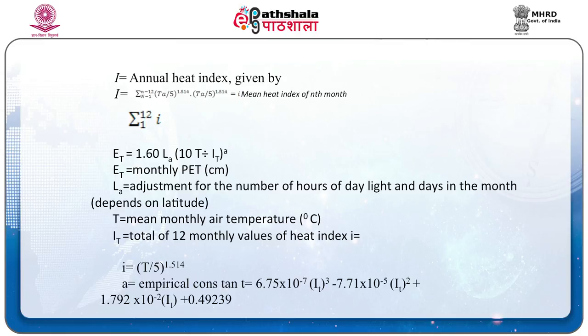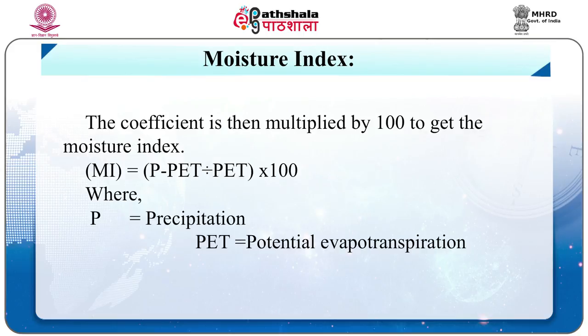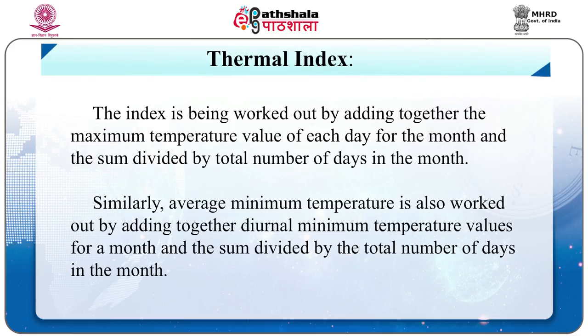Moisture Index: The proportion of precipitation that ultimately remains available for practical purposes after evaporation is known as moisture index. It is worked out by subtracting potential evapotranspiration from precipitation, dividing the balance by PET, and multiplying by 100. Formula: MI = (P − PET) / PET × 100, where P is precipitation and PET is potential evapotranspiration.